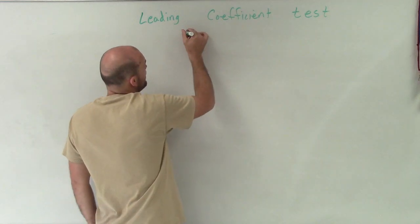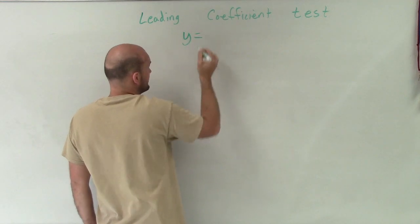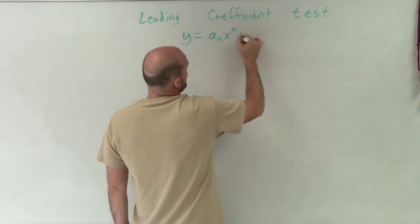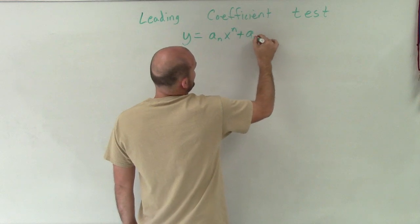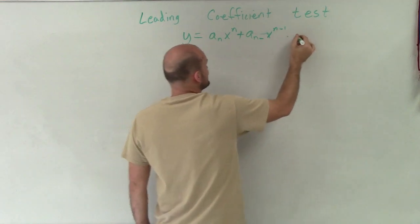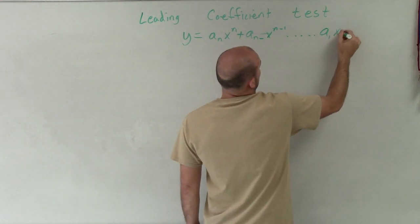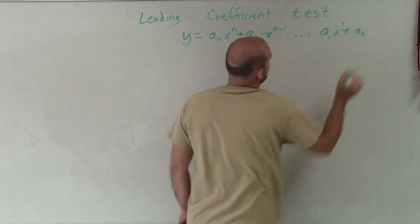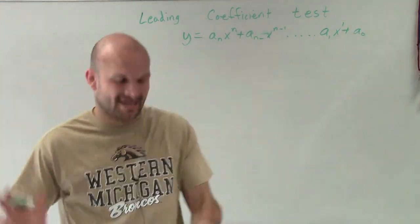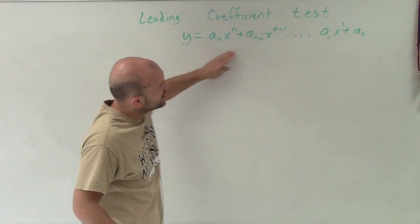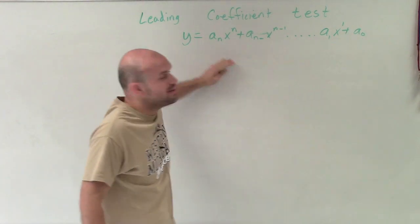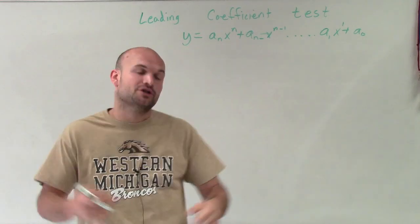Remember, a polynomial can be in the form of a sub n times x to the n, plus a sub n minus 1 times x to the n minus 1, dot dot dot, plus a sub 1 times x, plus a sub 0. To fully understand all this isn't really necessary, but this written form represents all polynomials.